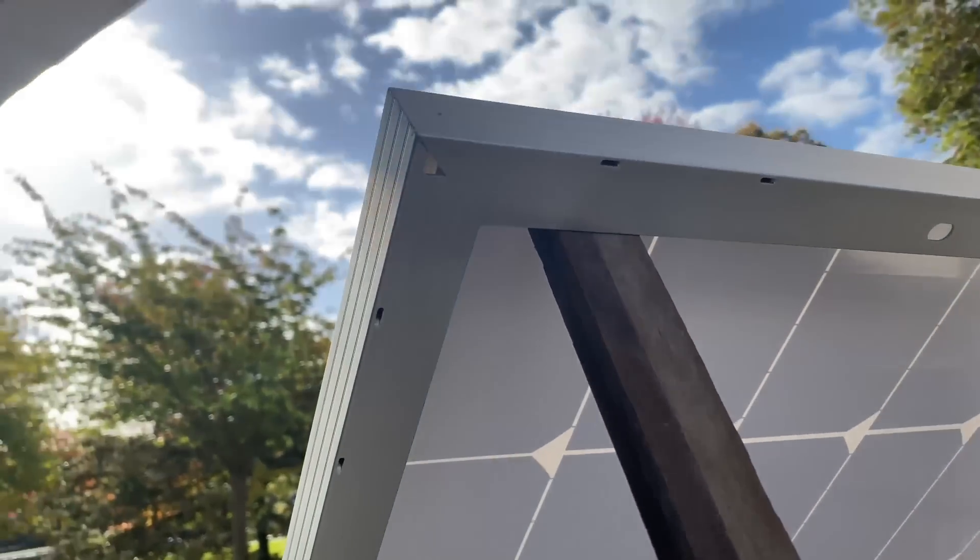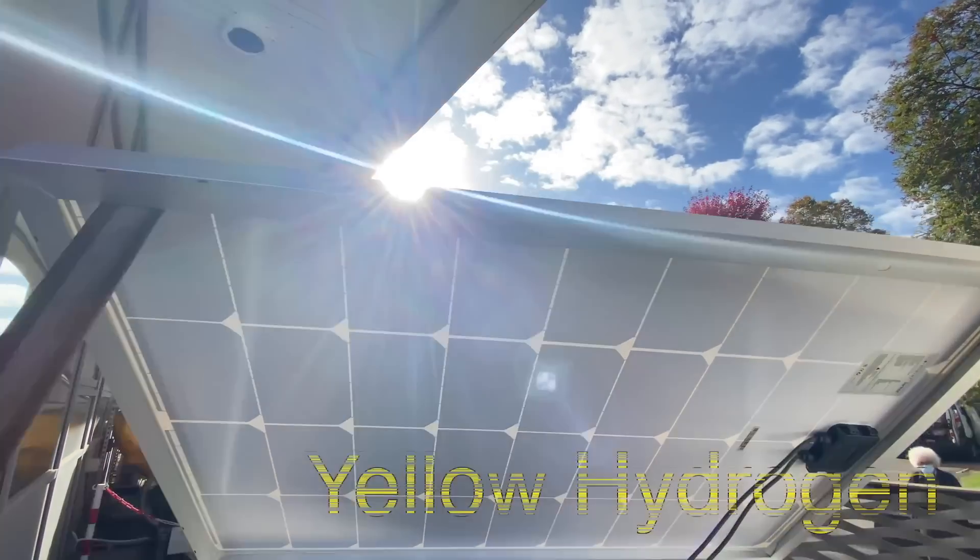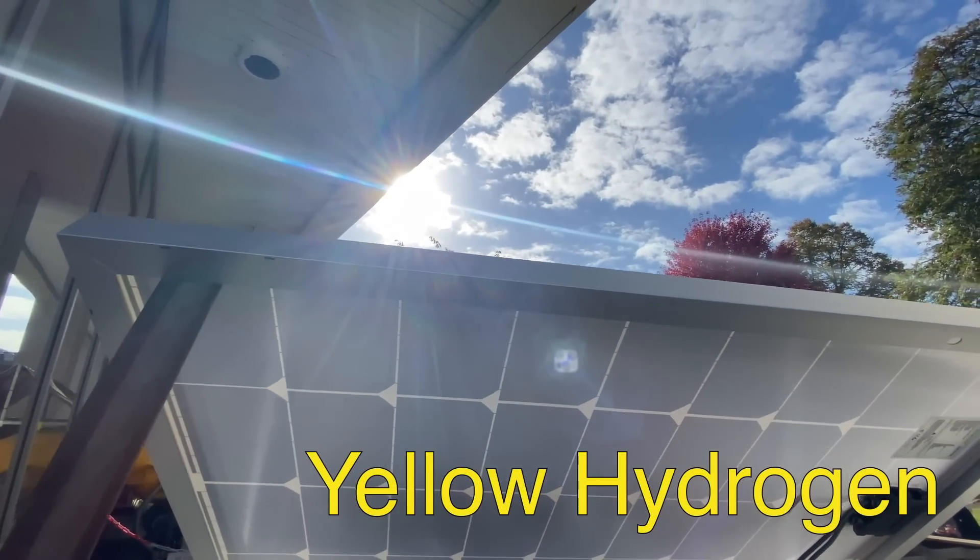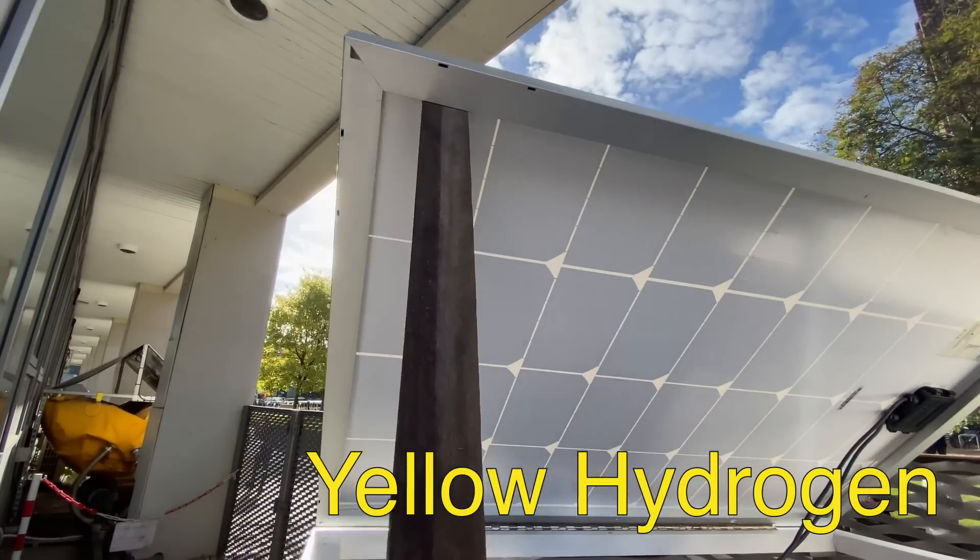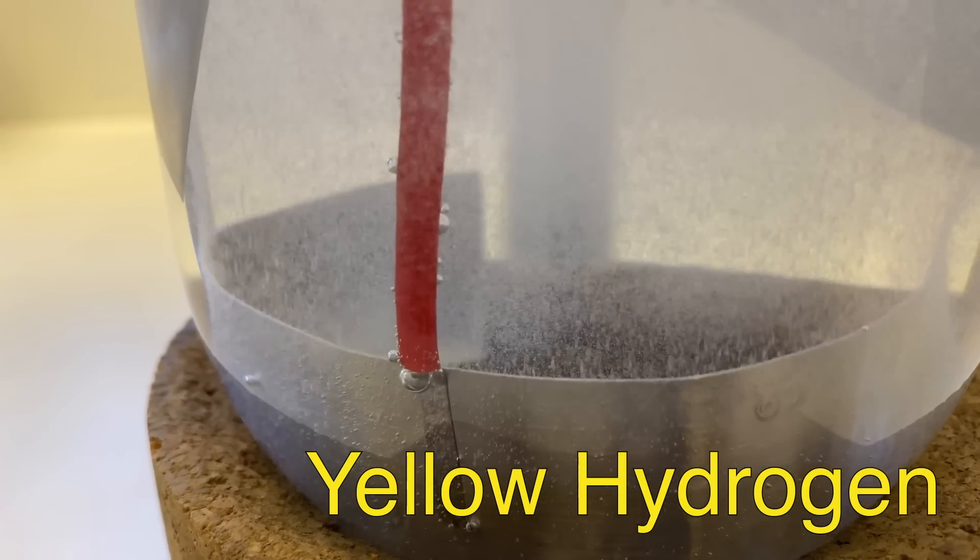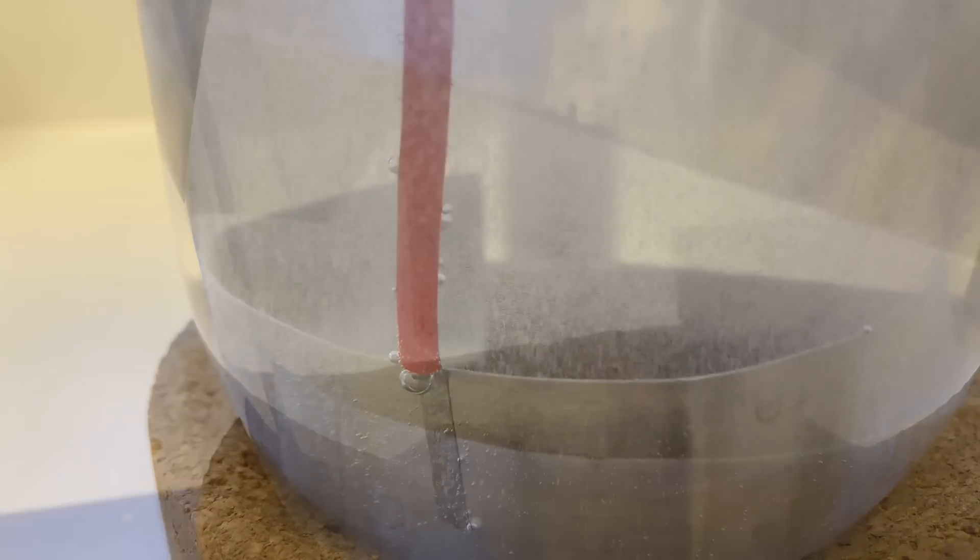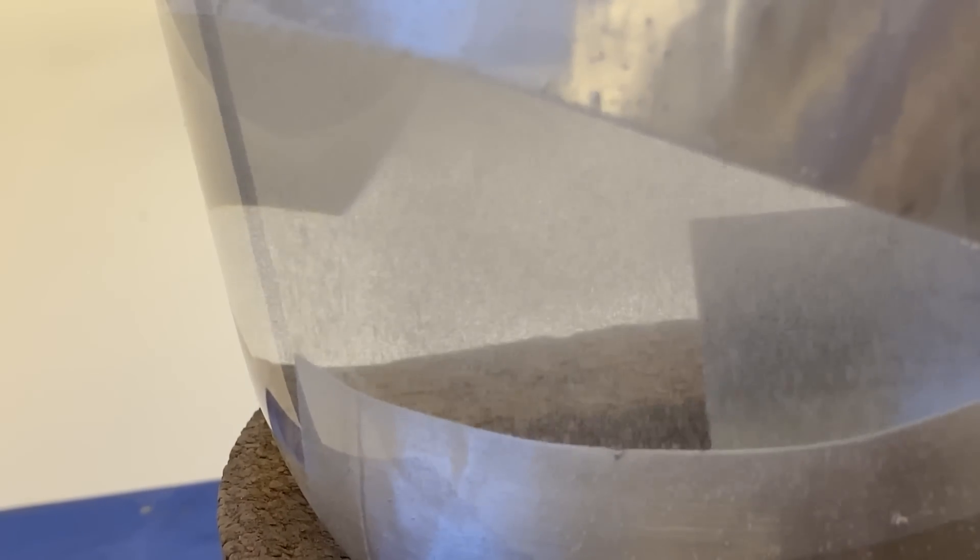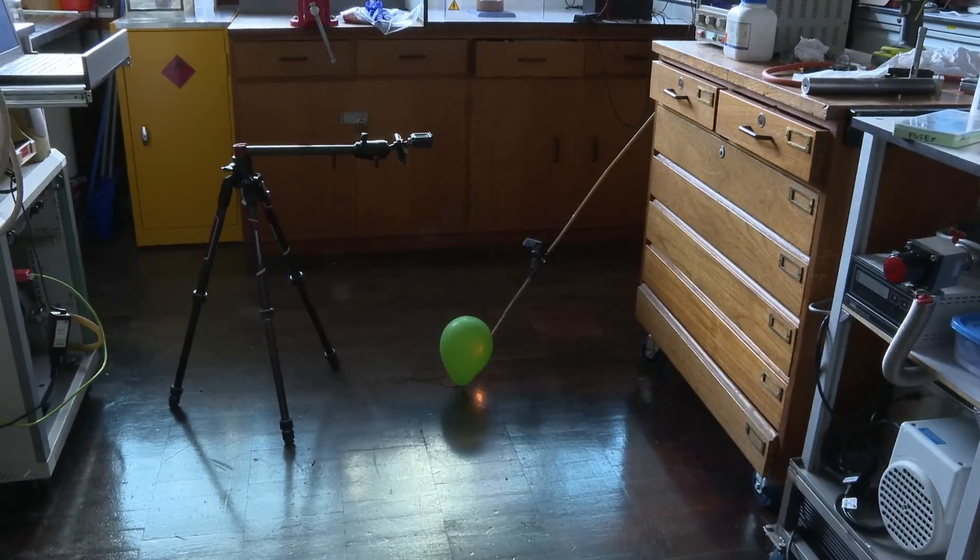There is one extra twist that when we looked up to check that we got the right colors for hydrogen, people have now started talking about yellow hydrogen, which is hydrogen made from electricity from solar energy. So Neil's hydrogen, perhaps rather than being green, is actually yellow. But he didn't have a balloon that was both green and yellow.